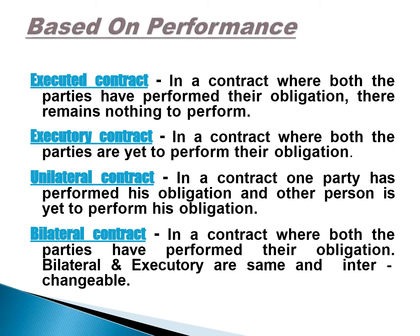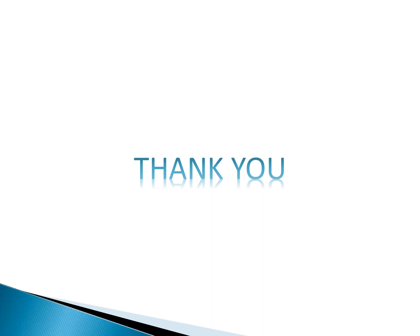Based on performance: an executed contract is one where both parties have completed their obligations and nothing remains to be performed. An executory contract is one where both parties have not yet completed their performance. A unilateral contract is one in which one party has performed their obligation and the other party is yet to perform — for example, I have sold my car but payment is still pending. A bilateral contract is when both parties have their expected obligations to complete. This was the topic for today; next time we will meet with a new topic. Thank you.